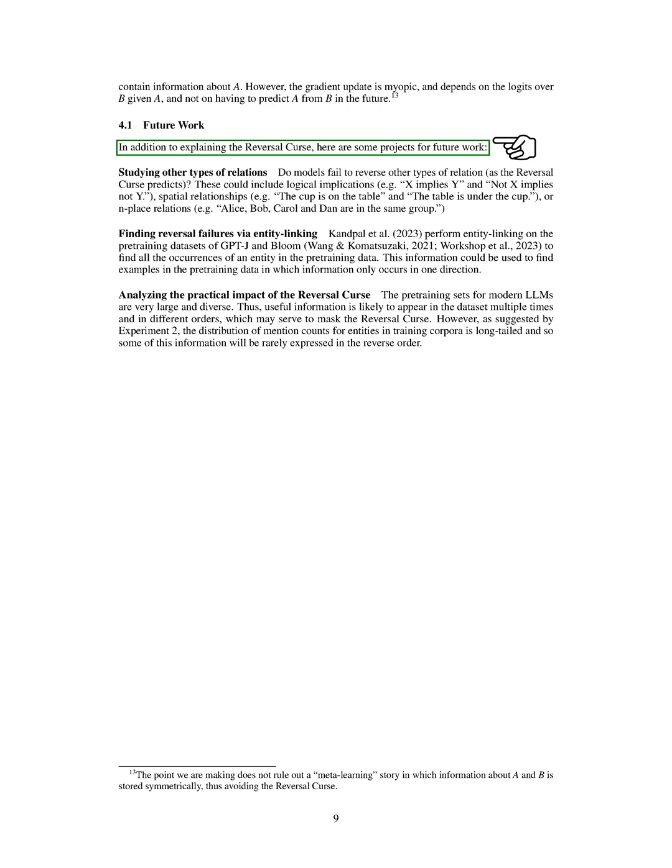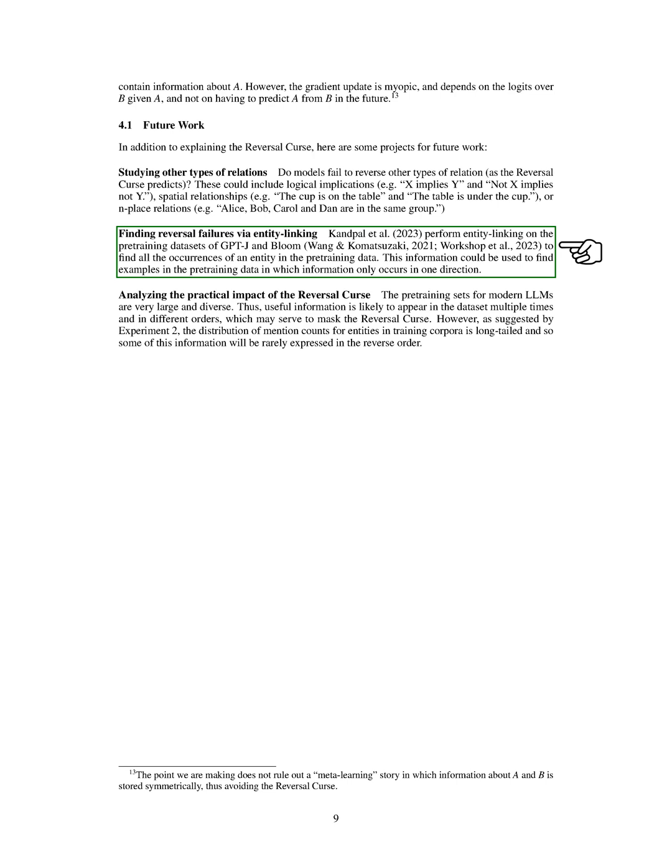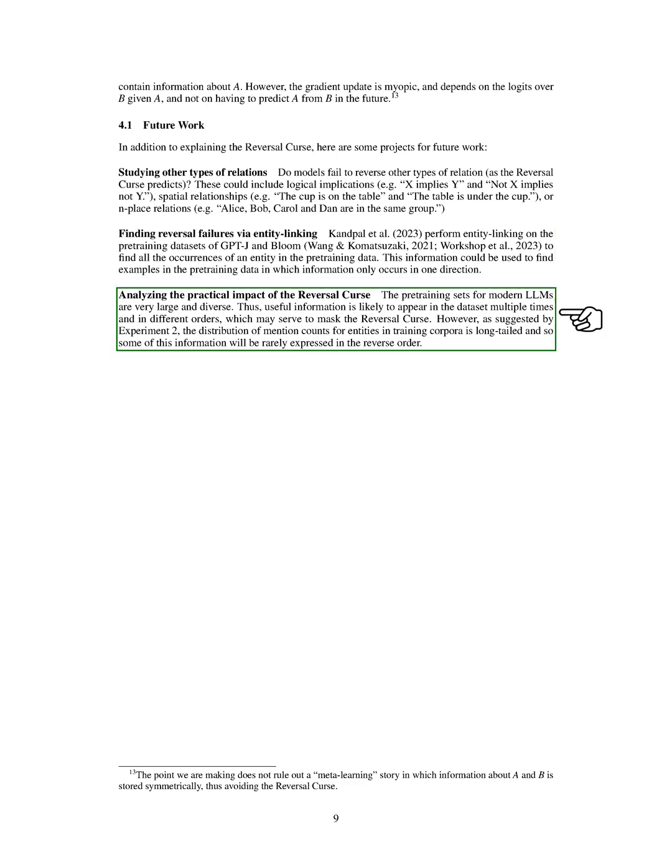Looking ahead, we plan to investigate whether LLMs struggle to reverse other types of relationships, such as logical implications, spatial relationships, or n-place relations. We also plan to use entity linking on the pre-training datasets of GPT-J and BLOOM to find all occurrences of an entity in the pre-training data, which could help us identify examples where information only appears in one direction. Finally, we want to analyze the practical impact of the reversal curse. Modern LLMs are trained on large, diverse datasets, so useful information is likely to appear multiple times and in different orders, potentially masking the reversal curse. However, our second experiment suggests that the frequency of entity mentions in training corpora is long-tailed, meaning some information is rarely expressed in reverse order.